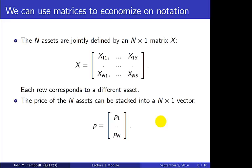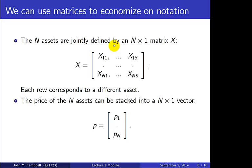Now we want to consider all assets together, using matrices to economize on notation. The N assets are jointly defined by an N-by-S matrix X. The first asset is the first row, the second asset the second row, and so on down to the Nth row. There are S columns: the first column tells what happens if state 1 occurs, the second column for state 2, and so on up to the Sth column for state capital S.